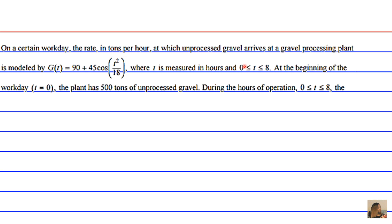At the beginning of the workday, where t = 0, the plant has 500 tons of unprocessed gravel. During the hours of operation between 0 and 8 hours, the plant processes gravel at a constant rate of 100 tons per hour.